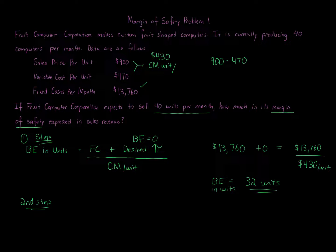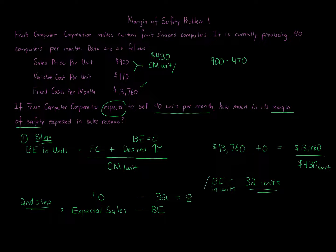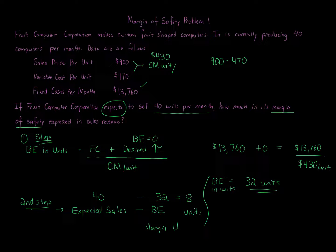The company expects to sell 40 units. So we take expected sales of 40 units minus the break-even of 32 units, which gives us a margin of safety of 8 units. The margin of safety is 8 units — meaning we are 8 units above the break-even point.